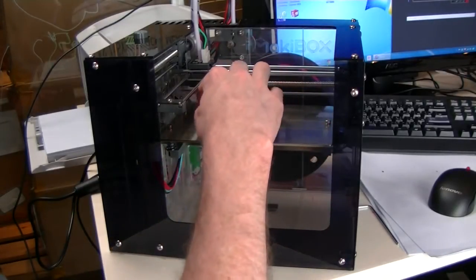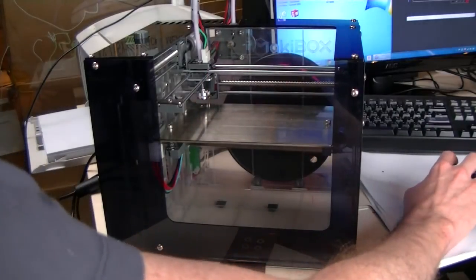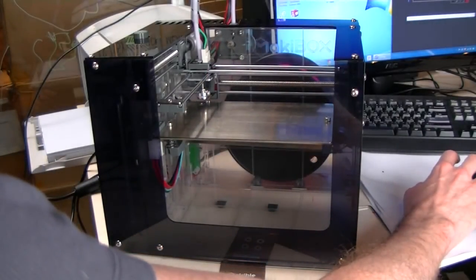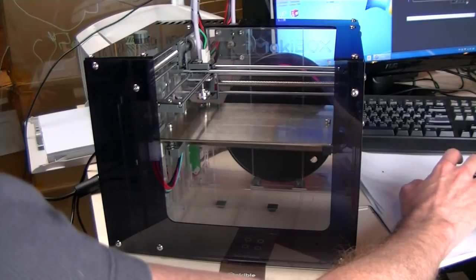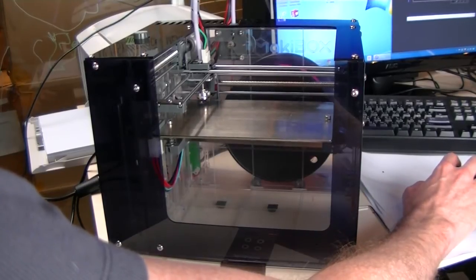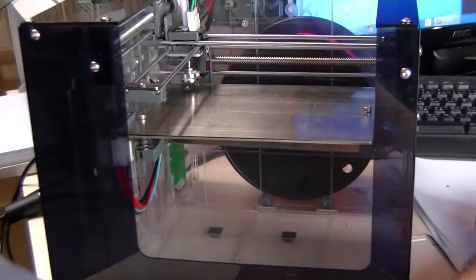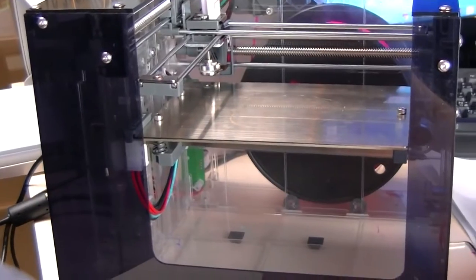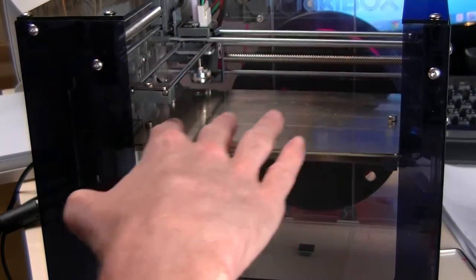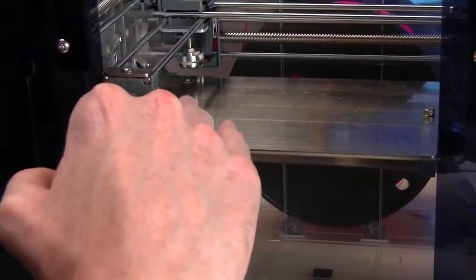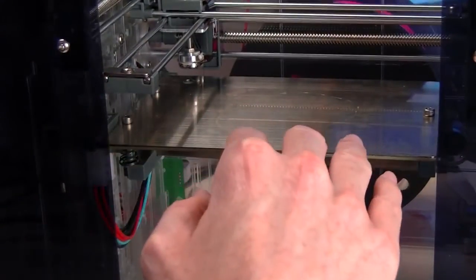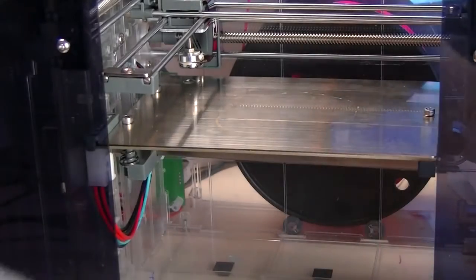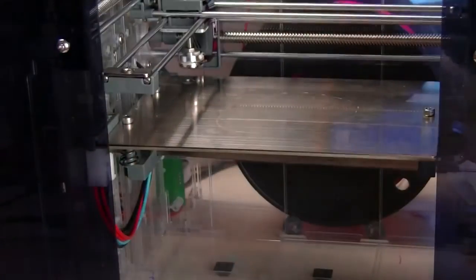So I'll start with this position over in the corner. First I'm going to home it just to make sure the machine knows where it's at and I'm going to drop it down a bit. Now if it's unleveled, make sure that you've at least got it basically below where the homing height is and then you can raise it up into the head. Generally you want to avoid having it home into the bed actually touching it.